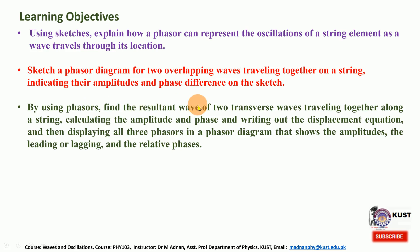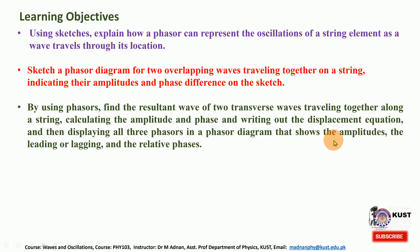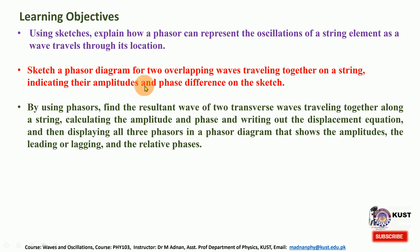Also, using the phasor, they will be able to find out the resultant wave of two transverse waves traveling together along the string. They will be able to calculate the amplitude and phase, and write the displacement equations, displaying all three phasors in a phasor diagram that will show the amplitude, the leading or lagging, and the relative phases — that is whatever we have done in the previous lecture on interference of waves.